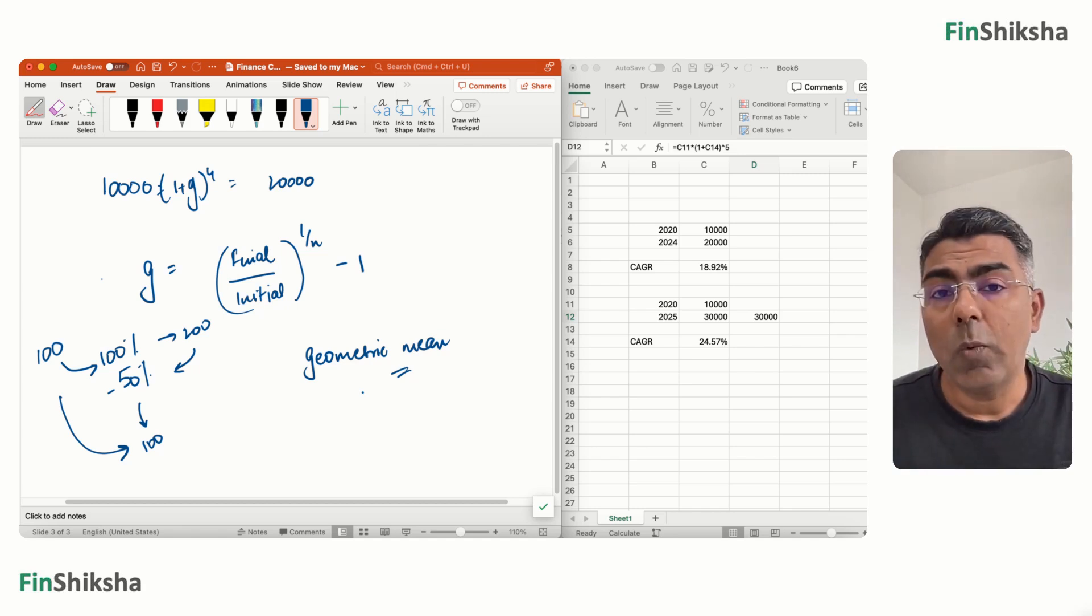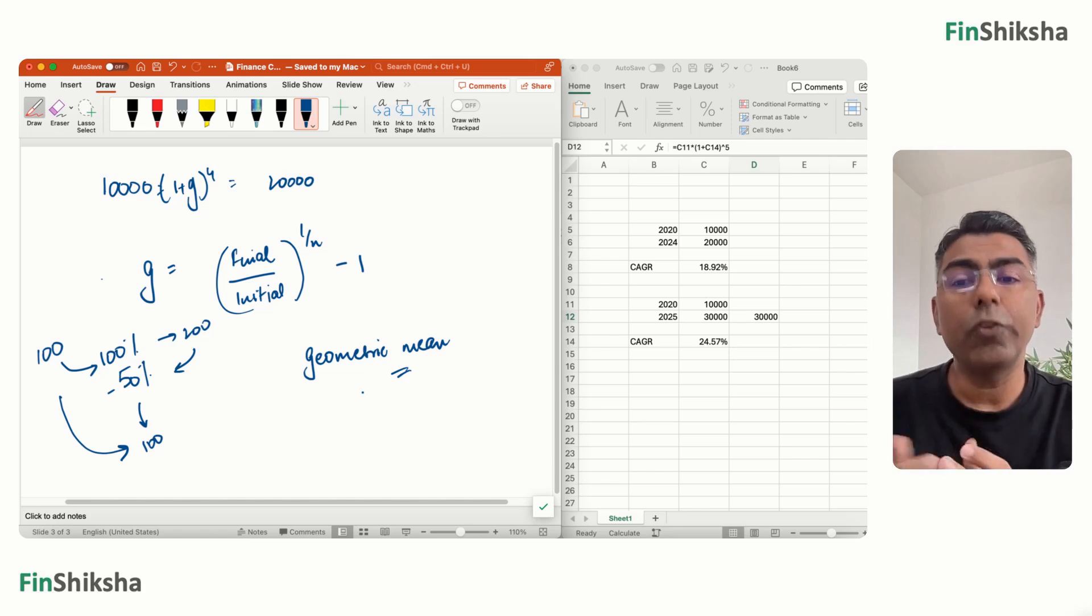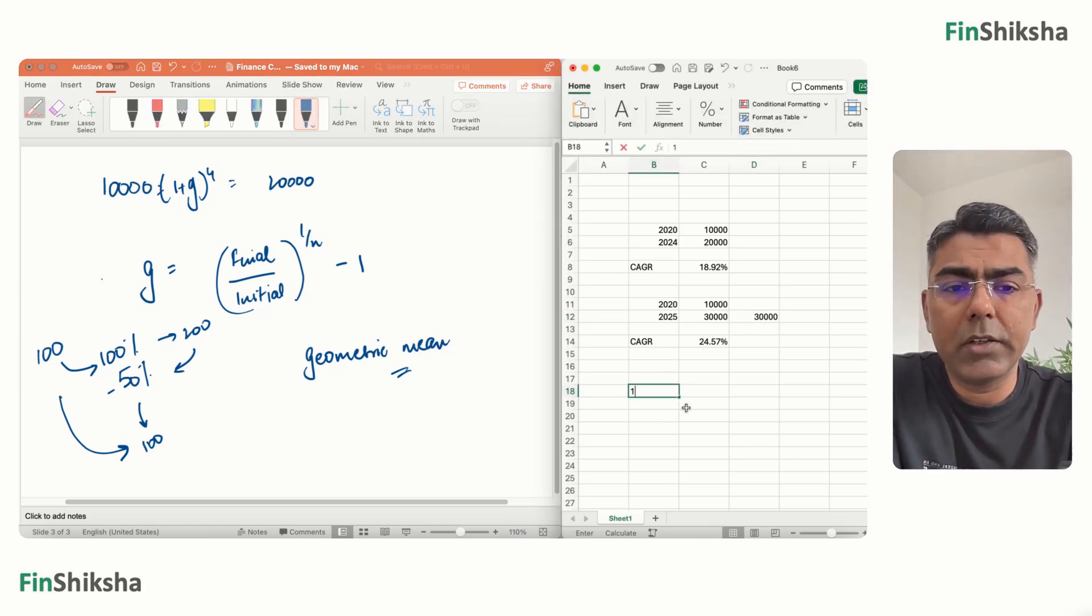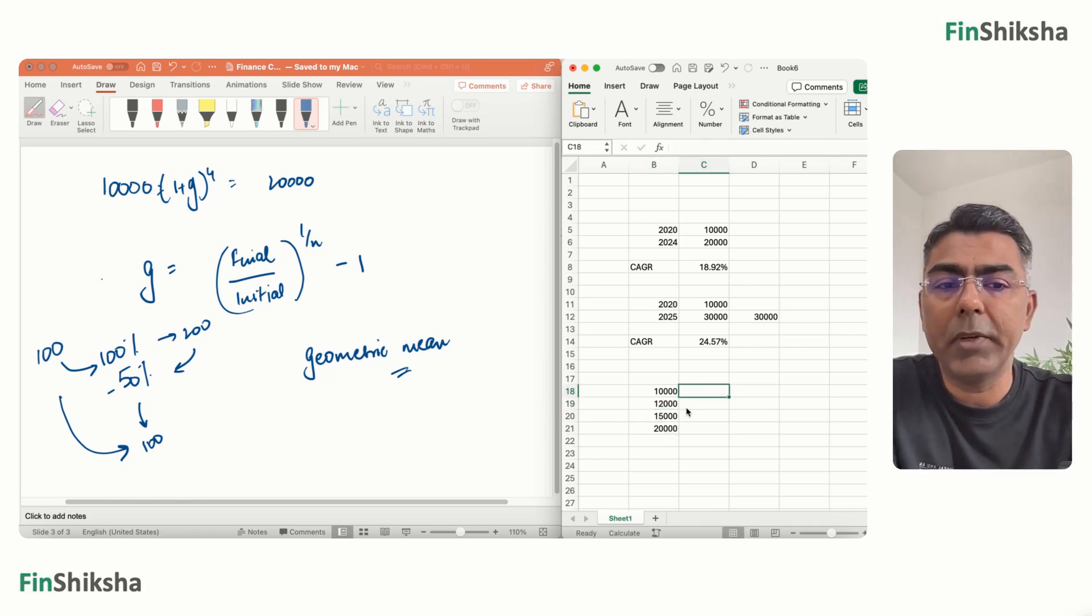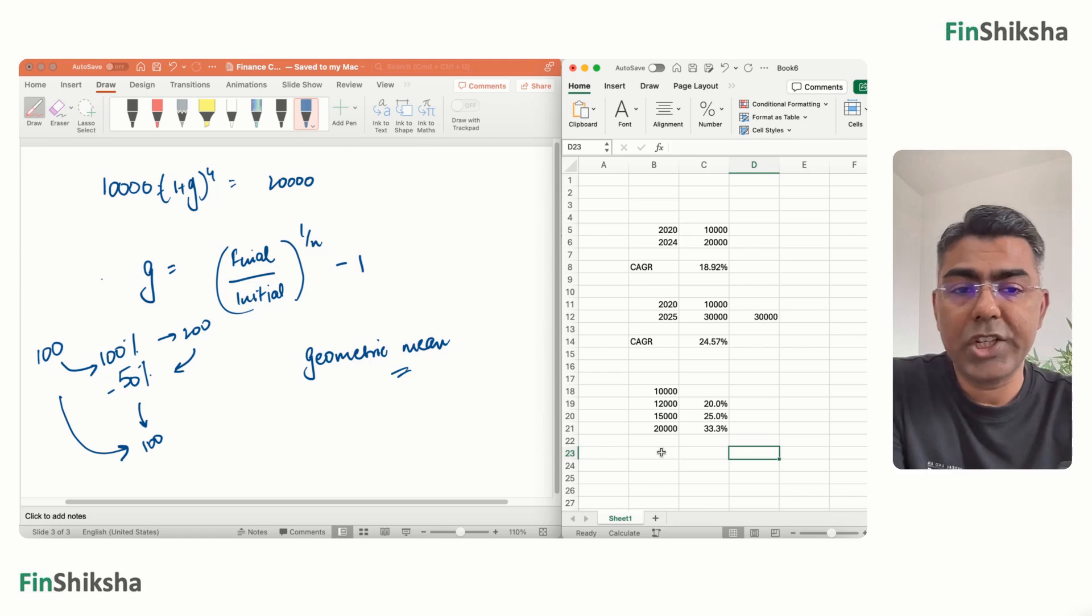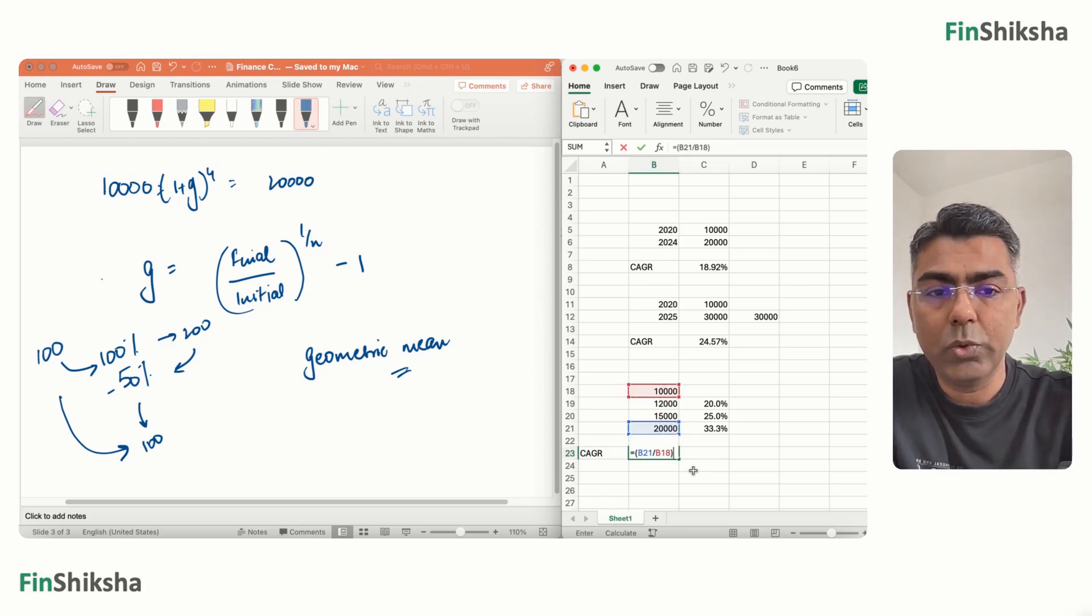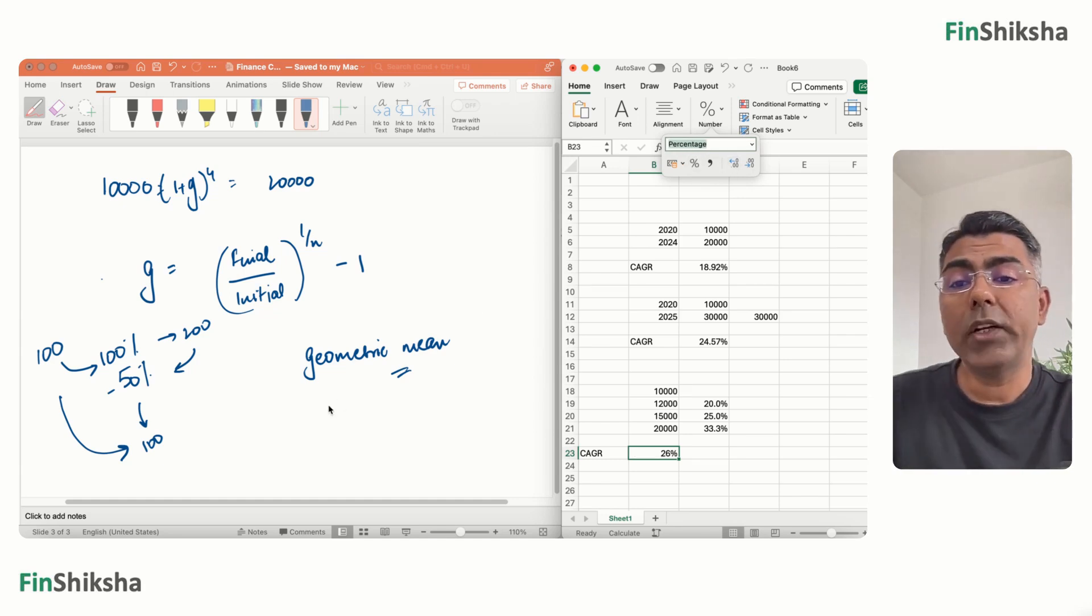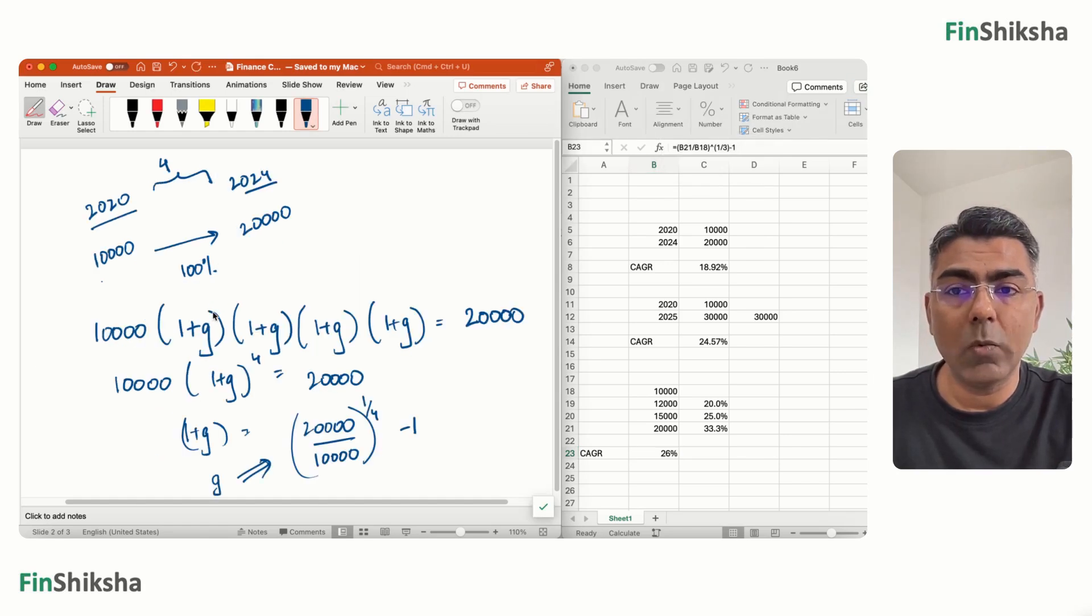Another way to look at CAGR is basically what is the geometric mean that you are finding for this set of growth rates in between. The growth rates that are coming, what is the geometric mean of those growth rates that you are looking at is what is going to give you the CAGR that is going to work out. Let's try that out as well. So let's say a particular investment grows from 10,000 to 12,000 to 15,000 to 20,000 over multiple years and the growth rates that you are calculating is 20% and 25% and 33% over that period. Now, CAGR if I were to calculate is going to be final value by initial value raised to the power, remember this is 3 years now, so 1 by 3 minus 1, that's my CAGR that we have calculated.